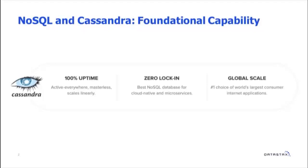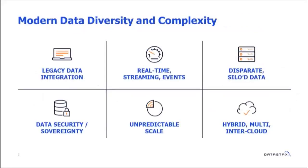If you look at data diversity today and the amount of things we have to contend with, there is a significant amount of complexity. If you take legacy data integration — whether you have a mainframe system, a project that got grandfathered in, or even an orbital mechanics platform implemented in Pascal that nobody wanted to change — you had to deal with integrating with it. Or it could be real-time stream events, IoT streams, event log data.